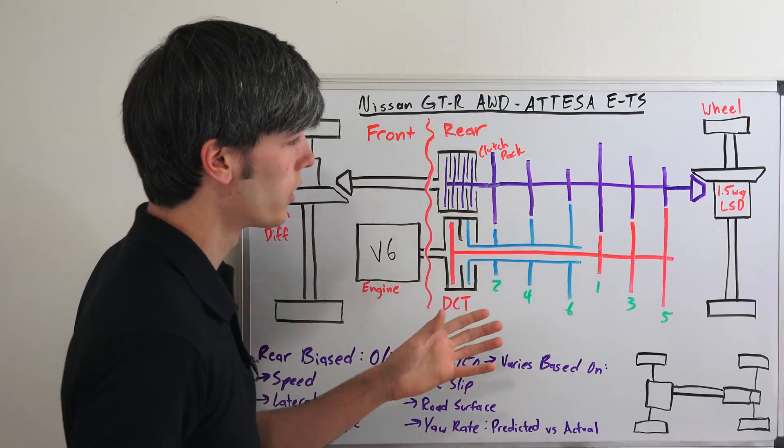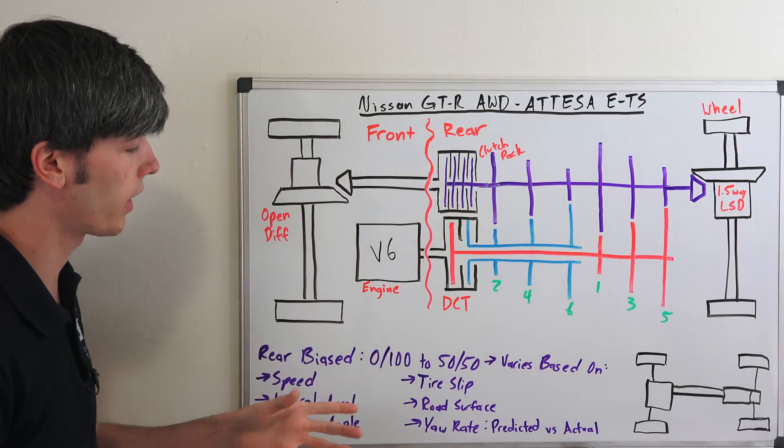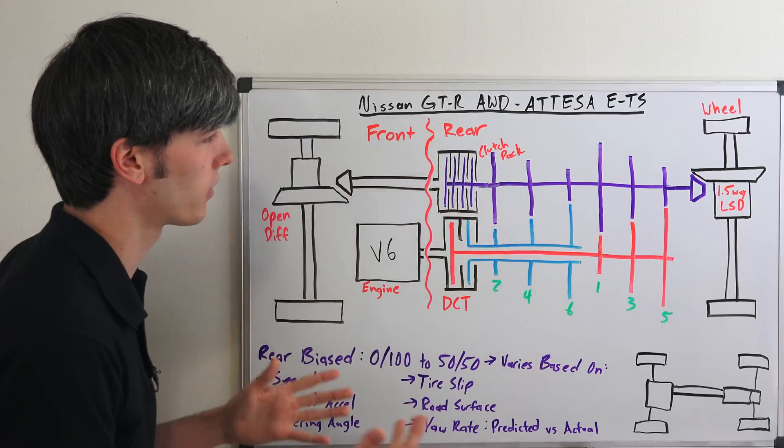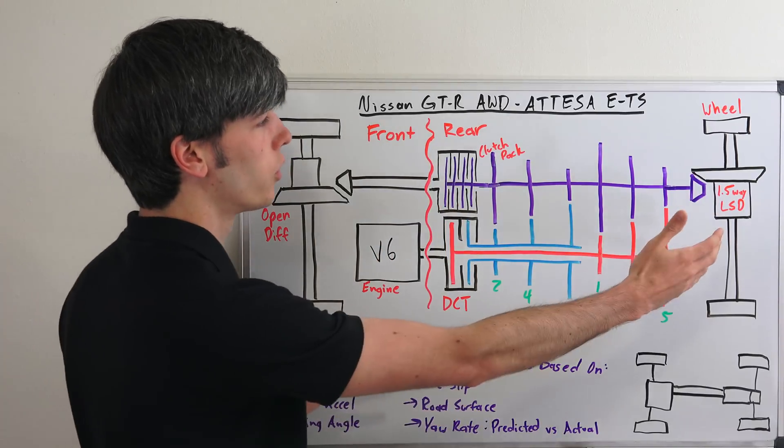And so as you can see in that scenario, if this clutch pack were not engaged, you'd be sending pretty much all of the power to the rear wheel. So it has a capability of sending almost a hundred percent. You're going to have a little bit through this clutch pack, but essentially sending a hundred percent of the power to the rear axle.